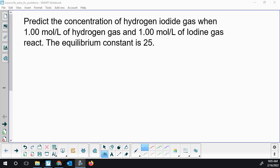In this question we want to predict the concentration of hydrogen iodide gas when we have 1.00 mol/L of hydrogen gas added to 1.00 mol/L of iodine gas, and we're given the equilibrium constant.